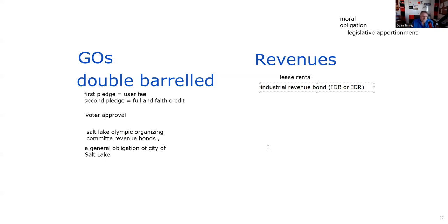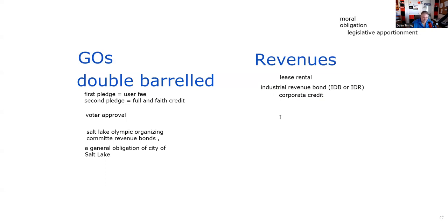Schwab has an 80-acre corporate campus in Lone Tree, Colorado. The city of Denver said: 'Schwab, why don't you come here? We could use 4,000 white-collar employees.' If you'll come to Lone Tree, we'll build that campus to your specifications, ready to occupy. The first test question is: corporate credit backs that bond, and Schwab's corporate credit is pretty good — single A. That's very testable. Also, Chicago had built Boeing a corporate headquarters in Chicago. Chicago's credit quality was double B and Boeing's was single A, so single A goes on the bonds.